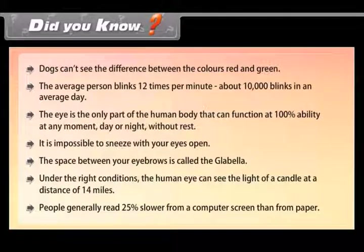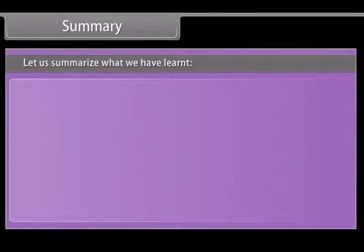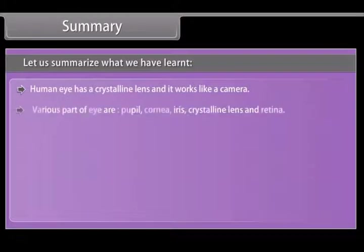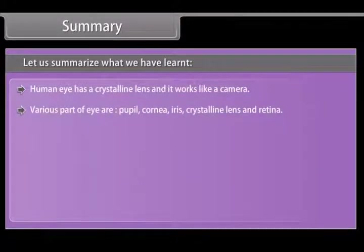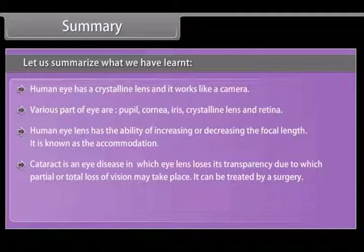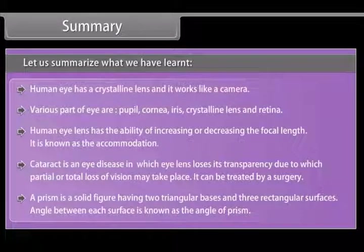Summary: The human eye has a crystalline lens and works like a camera. The main parts of the eye are the pupil, cornea, iris, crystalline lens, and retina. The human eye lens has the ability to increase or decrease its focal length — known as accommodation. Cataract is an eye disease in which the eye lens loses its transparency, causing partial or total loss of vision, and can be treated by surgery. A prism is a solid figure having two triangular bases and three rectangular surfaces; the angle between each surface is known as the angle of prism.